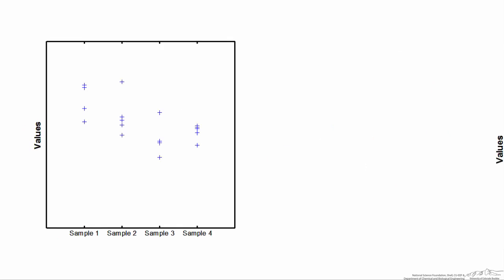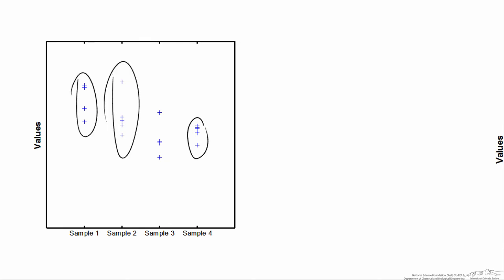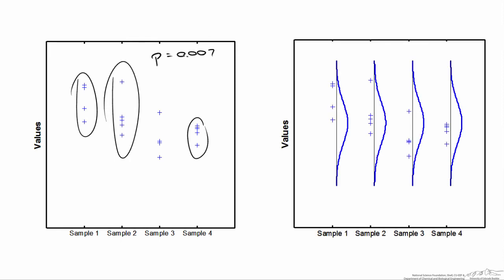Remember that an analysis of variance is not definitive. All it does is give you the odds that one of the population means is different. For example, looking at this data set, it looks like the population mean for sample four is considerably different than samples one and two. When you run the analysis of variance, what you'll get for this particular problem is a p-value equal to 0.007, providing a lot of evidence that there is indeed some difference. In reality, however, I gathered these data points based on normal distributions with the same means — mu1, 2, 3, and 4 are identical. So in this situation, we actually made a type 1 error, which means we refuted the null hypothesis when we shouldn't have.